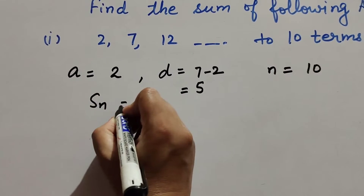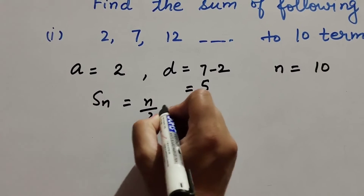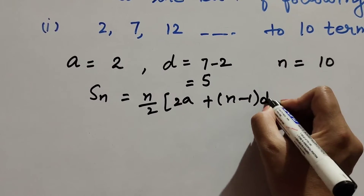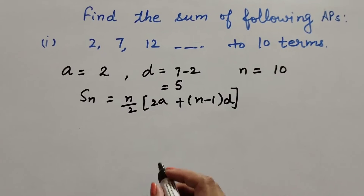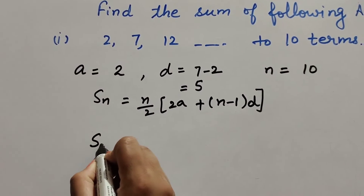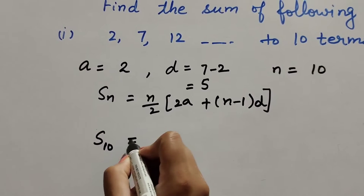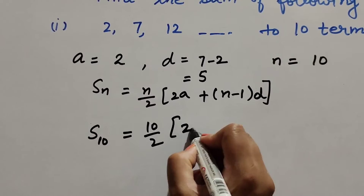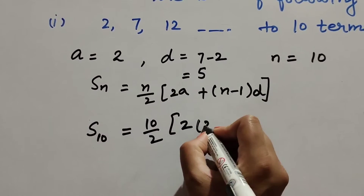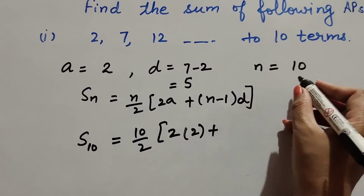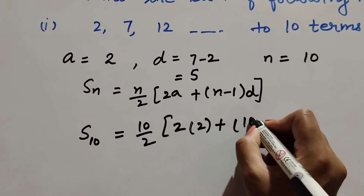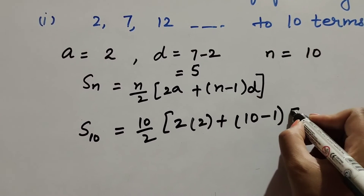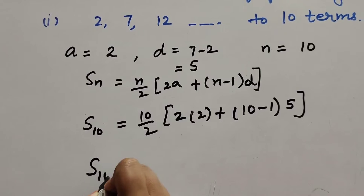We know the formula to find the sum of n number of terms of AP: Sₙ = n/2 × (2a + (n−1) × d). Here n is 10, so we compute: 10/2 × (2×2 + (10−1) × 5).